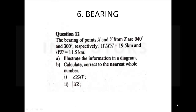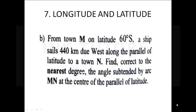Another question with a 60 to 70% chance of appearing is bearing. Bearing doesn't come out every year — it alternates, so if it doesn't come out one year it shows up the next. Longitude and latitude, together with bearing, has a 60 to 70% chance of actually showing up. Please work on these questions.